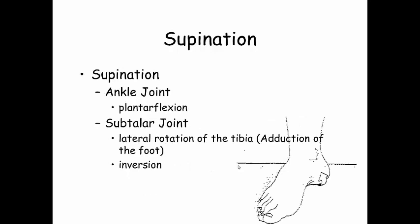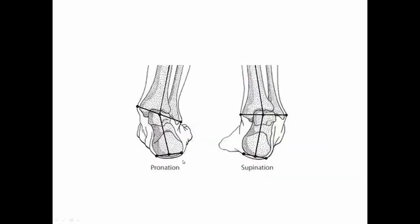Supination is the opposite. At the ankle joint, you plantar flex. At the subtalar joint, you have lateral rotation of the tibia, or adduction of the foot, and inversion. So pronation is like the medial part of your arches kind of falling in — that's the shock absorption phase. During supination, you raise that arch, your bones lock into place, and you create a rigid structure from which to propel forward.